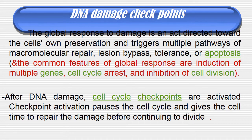Coming to DNA damage checkpoints: the global response to damage is directed towards the cell's own preservation and triggers multiple pathways of macromolecule repair, lesion bypass, tolerance, or apoptosis. Common features of the global response are induction of multiple genes, cell cycle arrest, and inhibition of cell division. After DNA damage, cell cycle checkpoints are activated — this activation pauses the cell cycle and gives the cell time to repair the damage before continuing to divide, an advantage to avoid passing on damage.